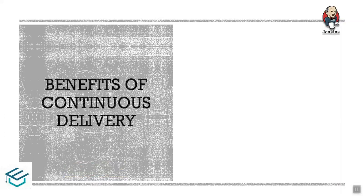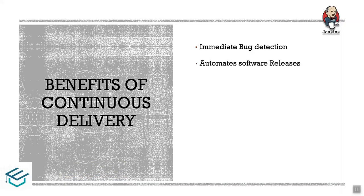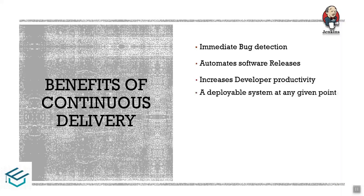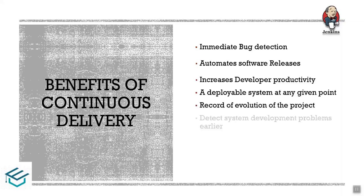The benefits of continuous delivery include immediate bug detection and automated releases — you can automate delivery and apply it continuously. Operations and developer productivity increase significantly. Developers can focus their attention on writing code rather than spending effort on manual checks. The product quality increases, and you have a deployable system at any given point. The code is always deployable in production, development, or any server layer. The evolution of the project is greatly increased.